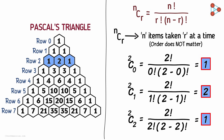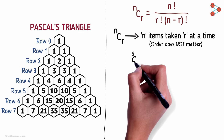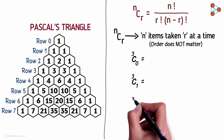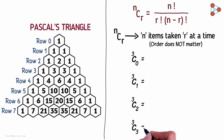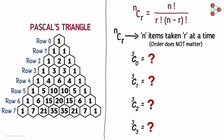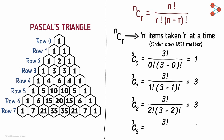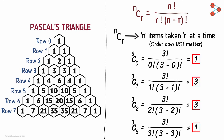Do you think there is some relation between combinations and Pascal's triangle? Let's find out. Calculate the values of 3C0, 3C1, 3C2, and 3C3 by yourself. The answers are 1, 3, 3, 1. These terms form the third row of Pascal's triangle.